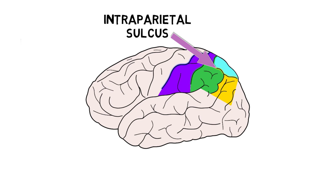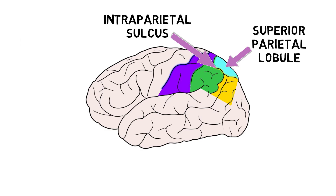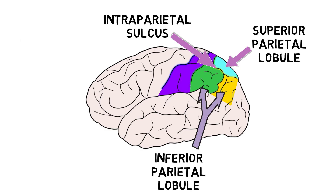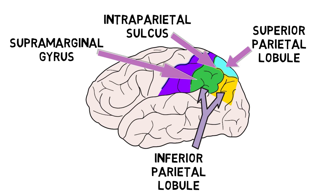A sulcus called the intraparietal sulcus reaches from the postcentral sulcus toward the occipital lobe. The intraparietal sulcus creates a division between two parietal regions: the superior and inferior parietal lobules. Both regions are involved with integrating sensory information to guide perception, attention, and interaction with the environment. The inferior parietal lobule also contributes to language processing and is itself made up of two gyri, the supramarginal gyrus and the angular gyrus, each involved with different aspects of language processing.